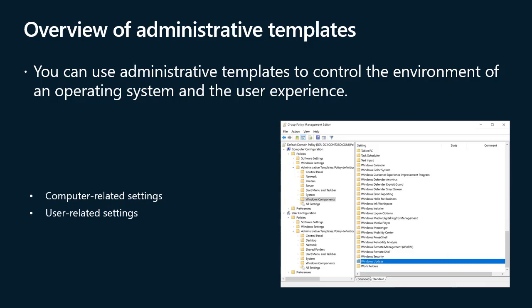Some settings exist for both user and computer, and some are available only to certain versions of Windows. For example, several new settings apply only to Windows 11. The administrative templates node has two sections: computer configuration and user configuration. In the case of conflicting settings, the computer setting prevails. Computer configuration includes settings related to control panel, network, printers, server, start menu and taskbar, system, Windows components, and all settings. User configuration includes settings related to control panel, desktop, network, shared folders, start menu and taskbar, system, Windows components, and all settings. Most nodes contain multiple sub-folders for organizing settings into logical groupings.